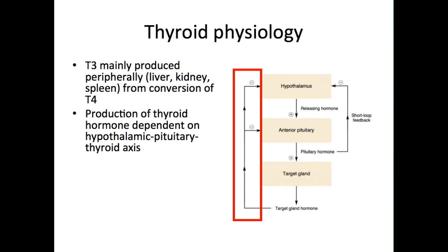An increase in thyroid hormone levels leads to negative feedback, where there is inhibition of the hypothalamus and anterior pituitary in producing TRH and TSH. Conversely, this system allows for an increase in TRH and TSH levels if there is a fall in thyroid hormone levels.